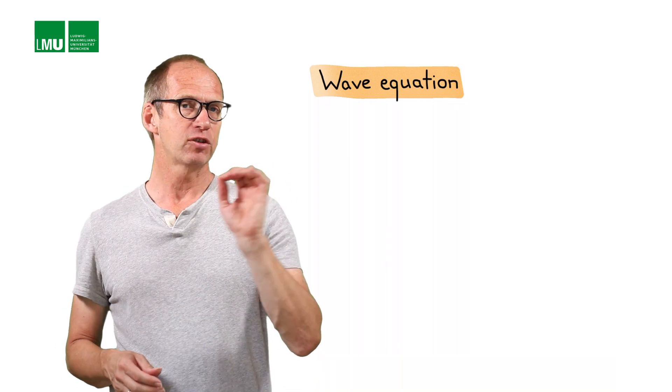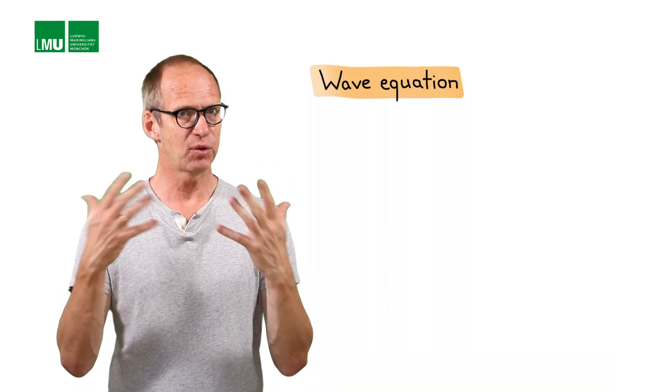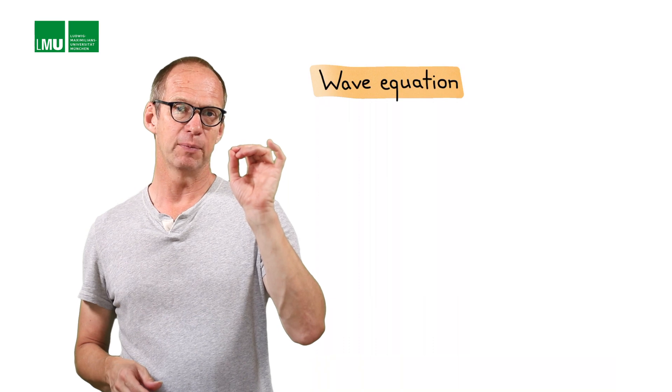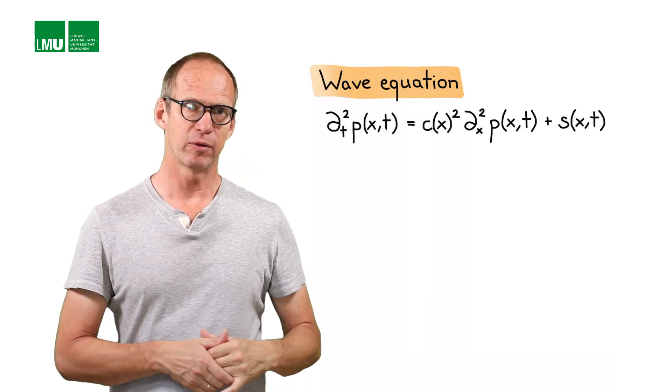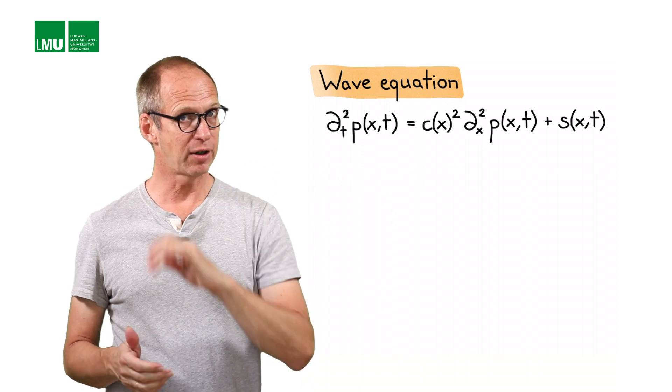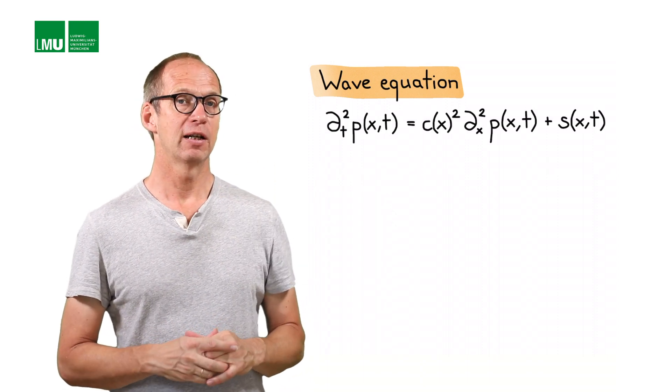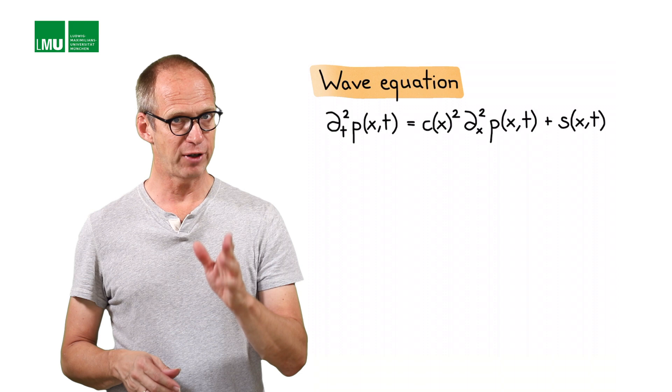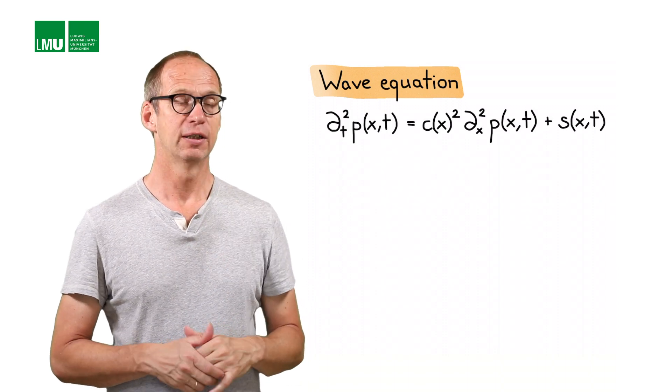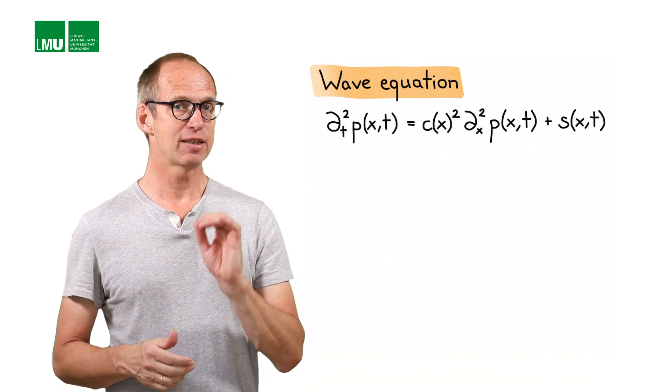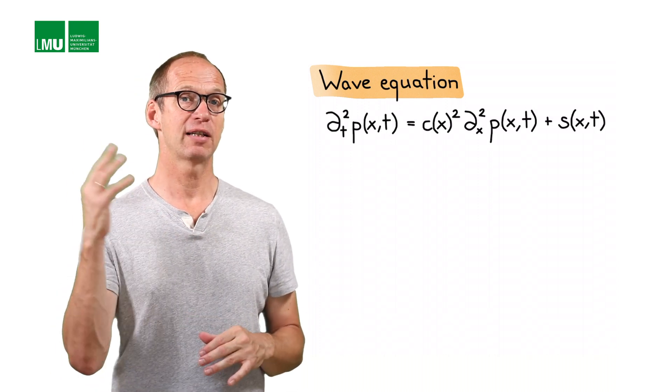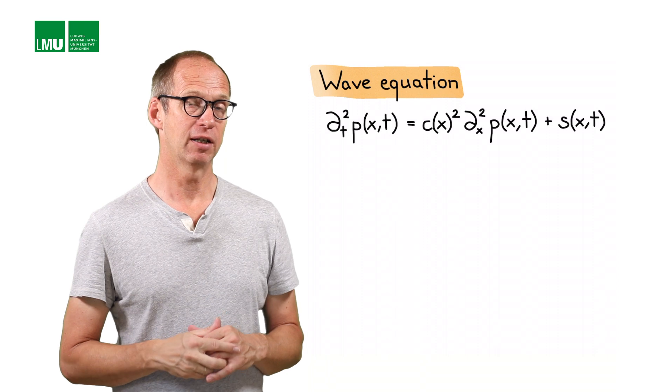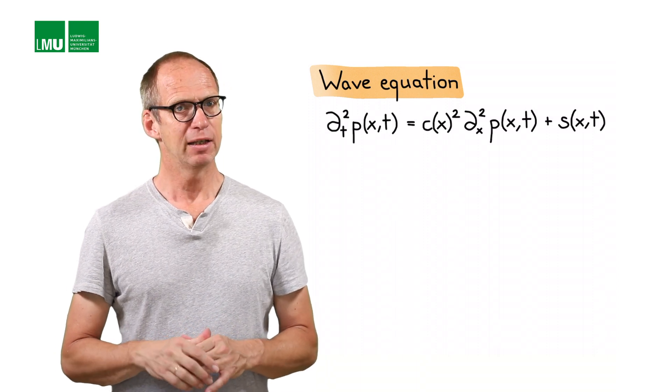The equation that we're going to use to illustrate the various numerical methods is the wave equation. Just a few words on what to expect in terms of solutions. We write the equation again here, which is the second time derivative of p, function of x and t, is equal to c squared, phase velocity squared, multiplying the second space derivative of the pressure, function of x of t, plus a source term also depending on x and t.